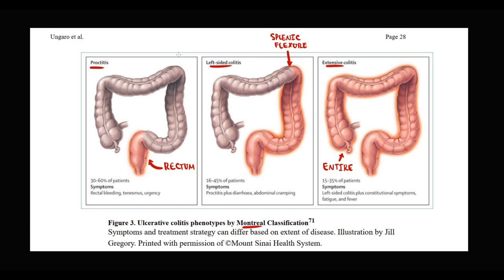In severe cases, inflammation can spread even to the ileum. If inflammation affects some portion of the ileum, we call this backwash ileitis. The more extensive the inflammation, the more severe the clinical symptoms. Ulcerative colitis affects everything in its path without exception — like fire in a forest, there are no skip lesions; it affects everything on its way.